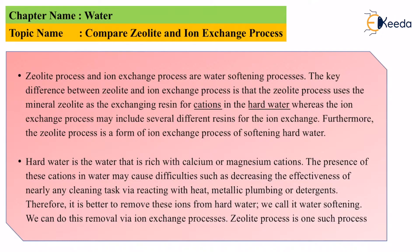Hard water is water that is rich with calcium and magnesium cations. The presence of these cations in water may cause difficulties such as decreasing the effectiveness of nearly any cleaning task, while reacting with heat, metallic plumbing, or detergents. So it depends from task to task and the entire procedure of how it works.